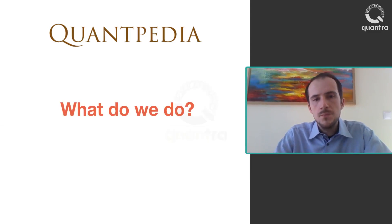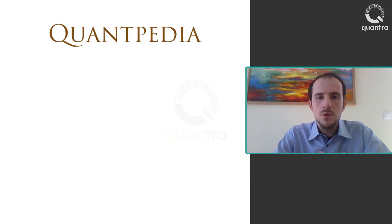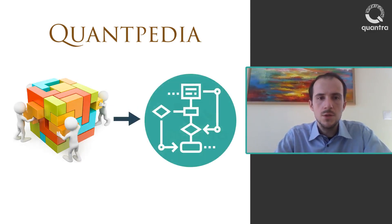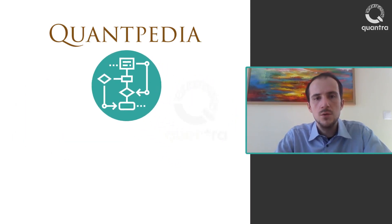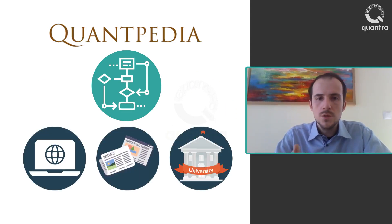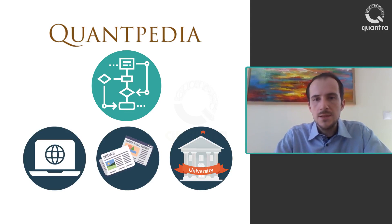What do we do? In Quantpedia, we are continually building a database of ideas for quantitative trading strategies which are extracted out of academic research papers. We read a lot of papers from research portals, financial journals, and universities, and select the best ones, extracting performance and risk characteristics and trading rules in plain language. Users can screen our database, learn from research, and look for inspiration.